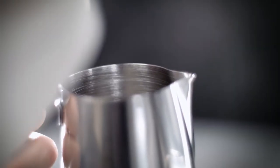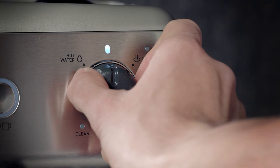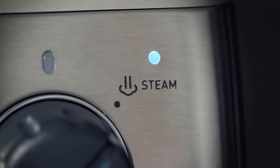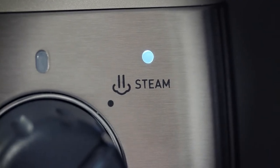For milk texturing, fill your jug with cold milk to just below the bottom of the spout. Turn the dial to the steam setting. The flashing light means the steam is heating up. Once the steam light stops flashing and stays on, the steam is ready.